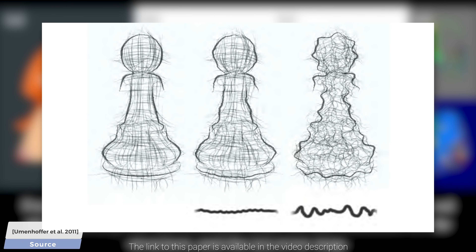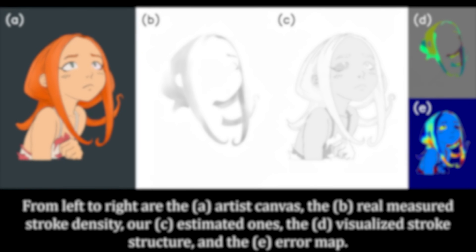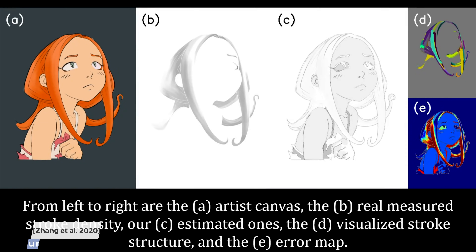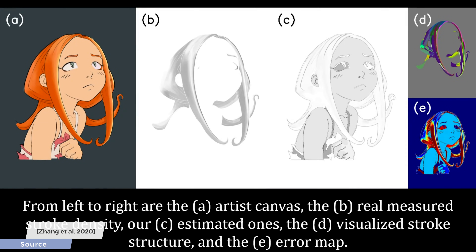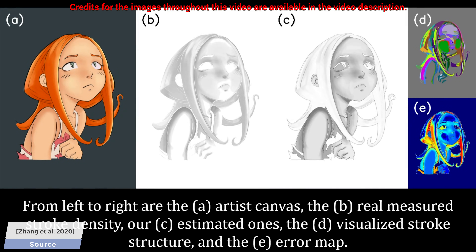So this was about silhouettes, but what about being able to change the lighting? To address this problem, this new work promises something that sounds like science fiction. The input is a painting, which is thought of as a collection of brushstrokes.